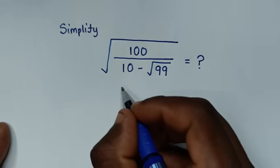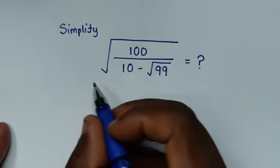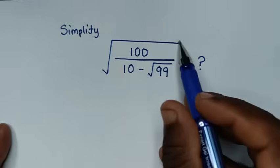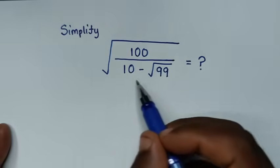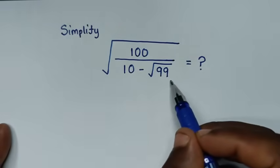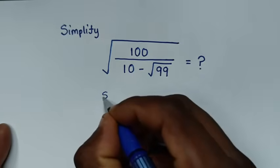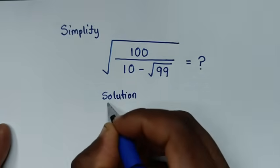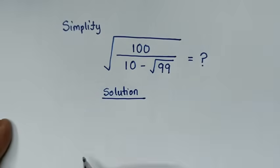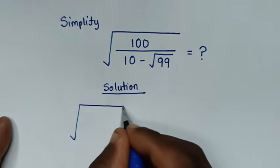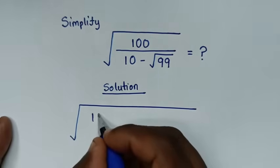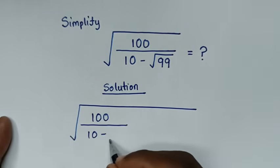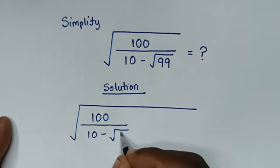Hello, you are welcome. We'll solve this math problem: simplify the square root of 100 over (10 minus square root of 99). The solution starts from the expression square root of 100 over (10 minus square root of 99).